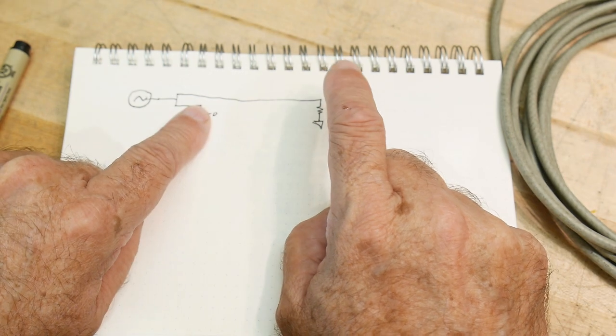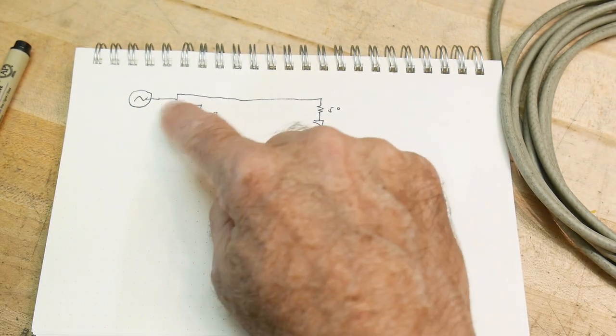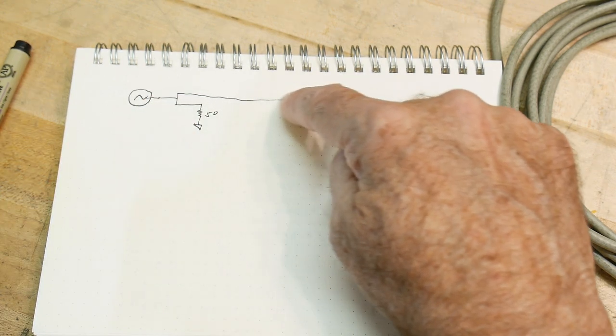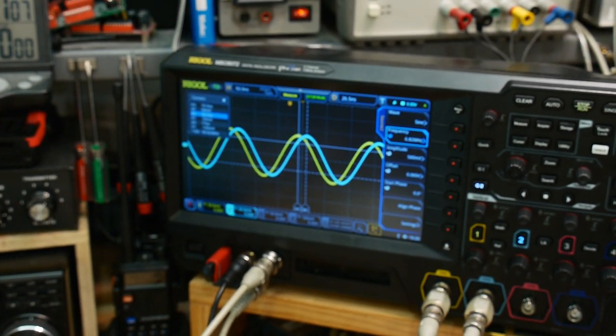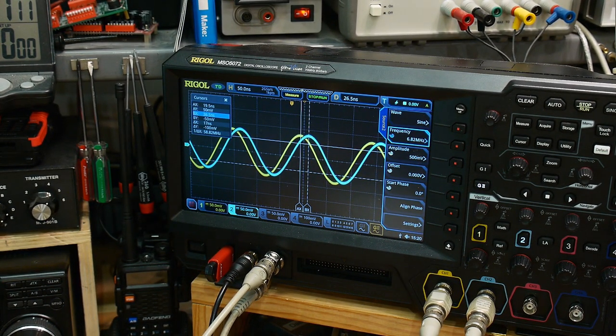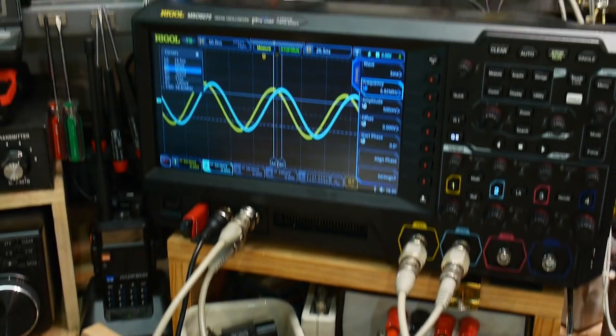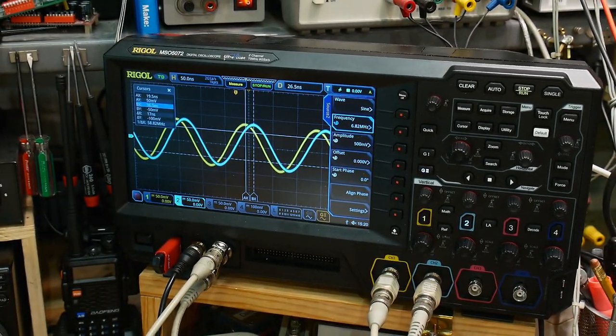On the scope, they're channel 1, channel 2. All right, so this one's going to get to the oscilloscope first, and then it'll take some time, and then this one will get to the oscilloscope, and we can see that there is a delay here, and it's about 17 nanoseconds for this little length of wire here. We get about 17 nanoseconds. That's just fine.